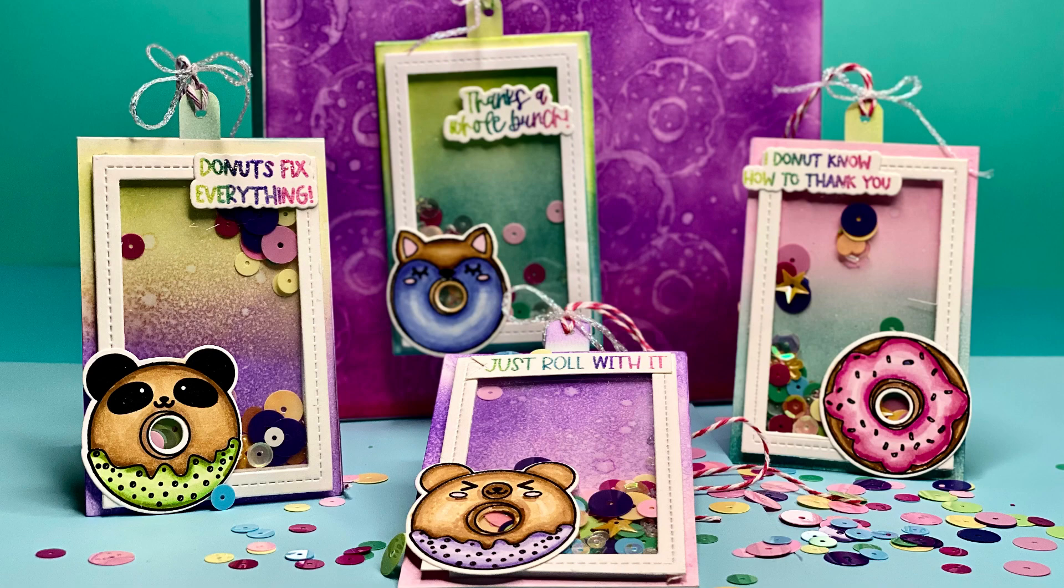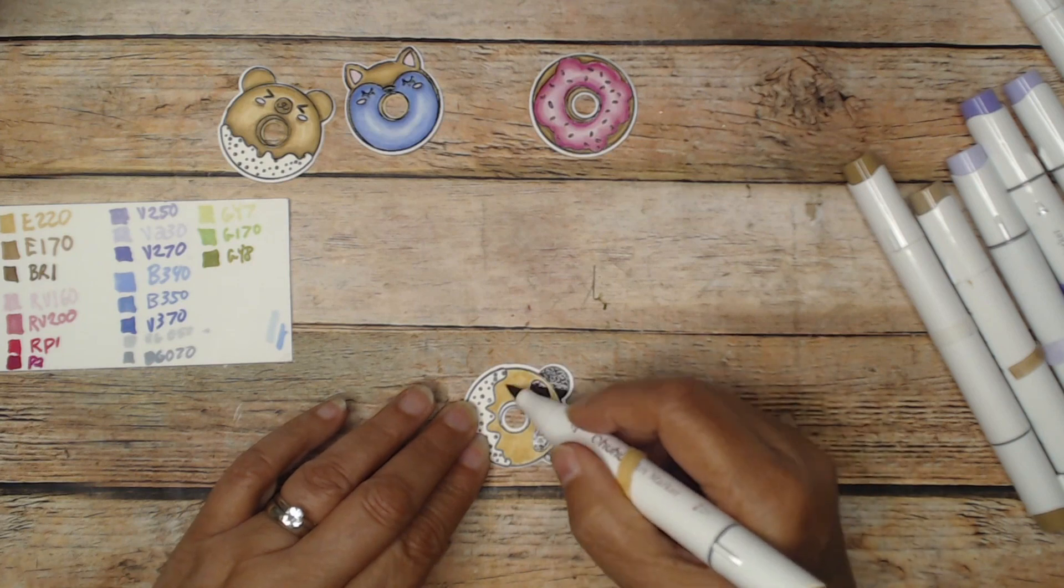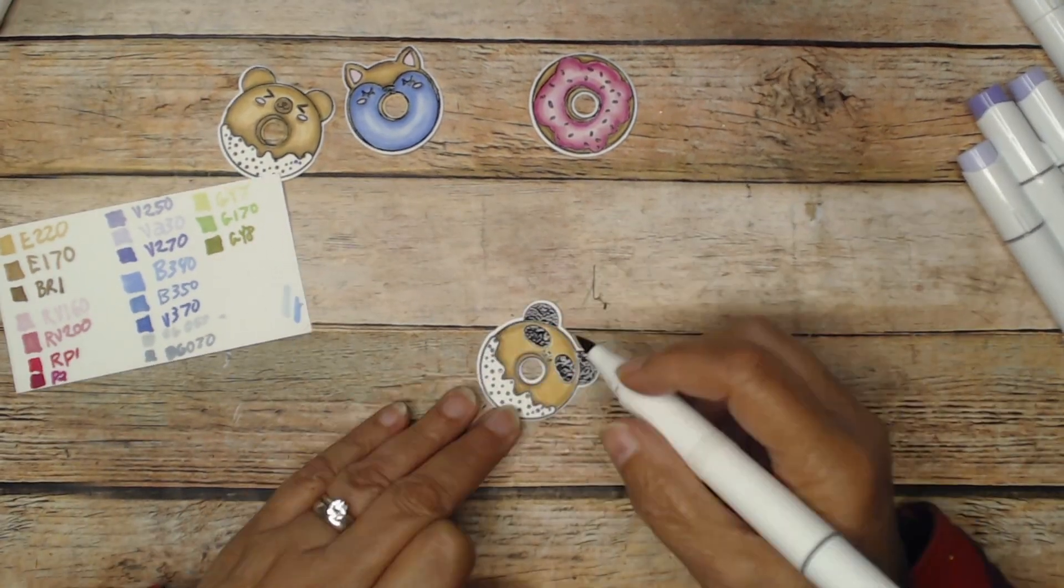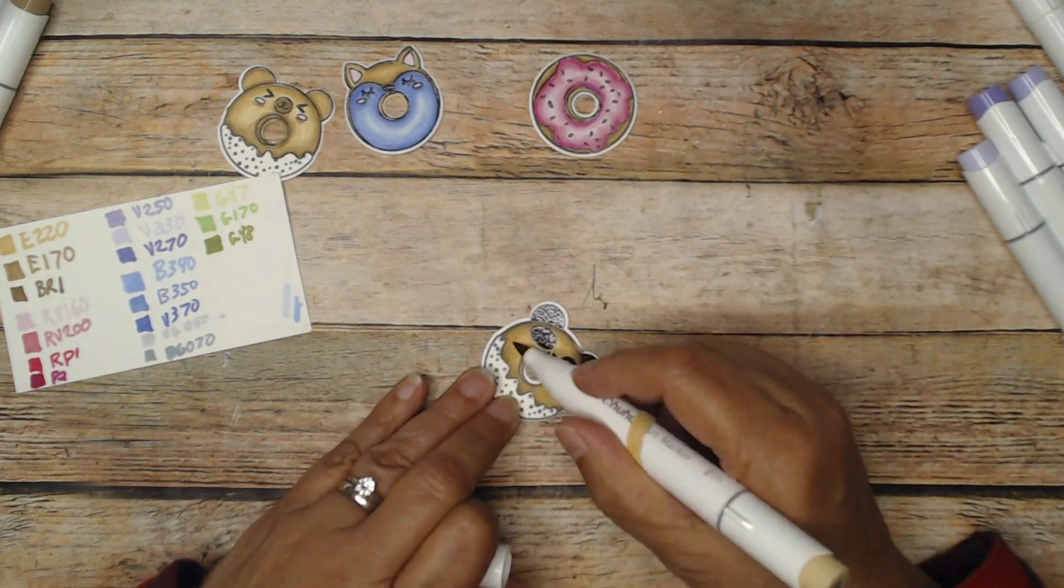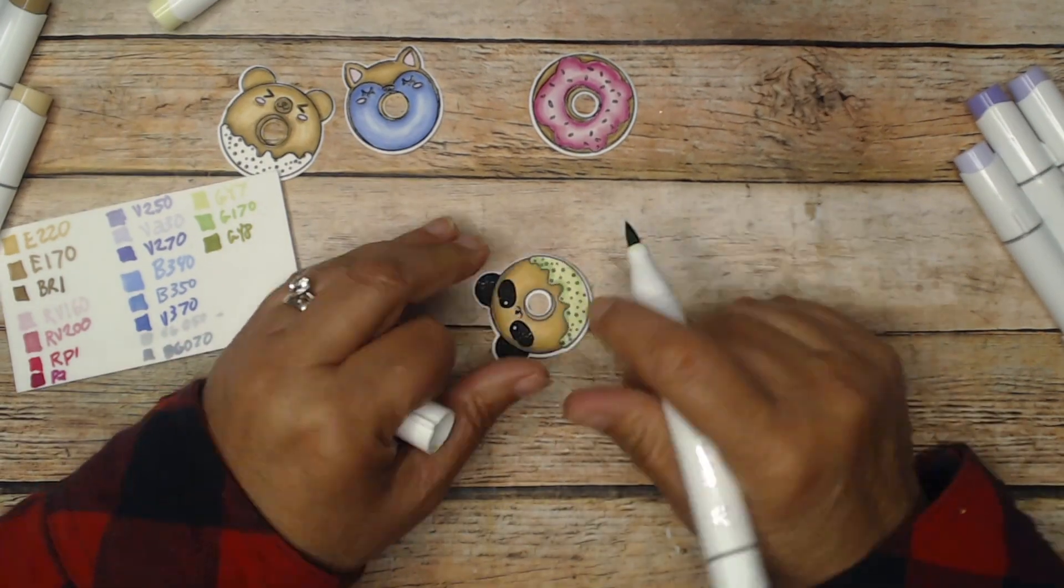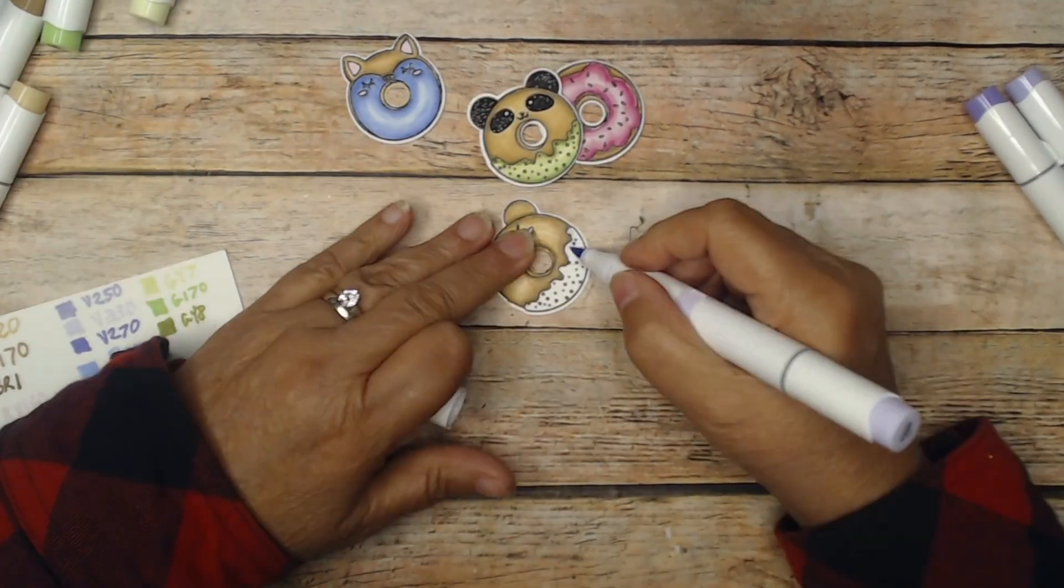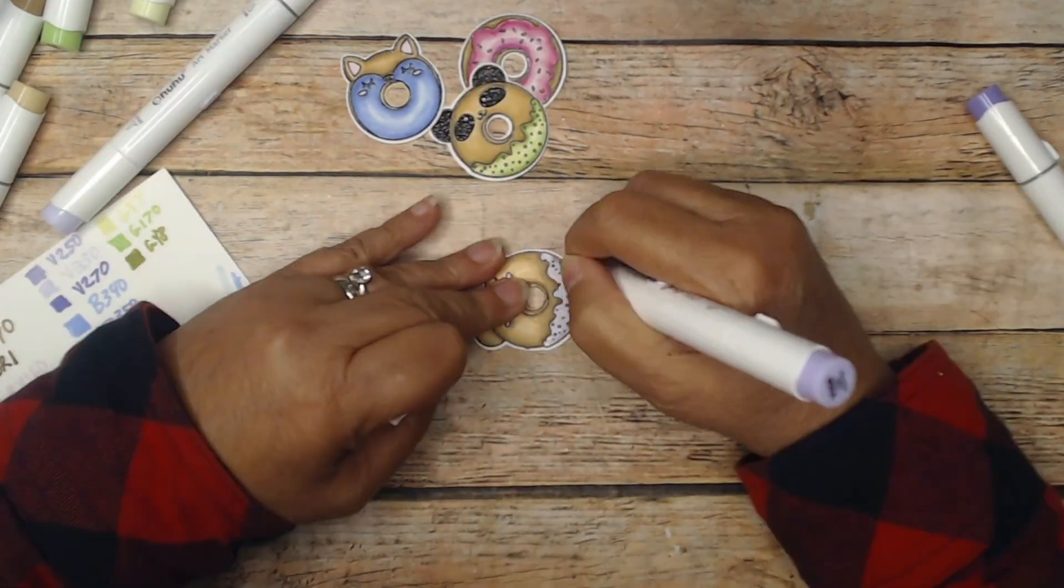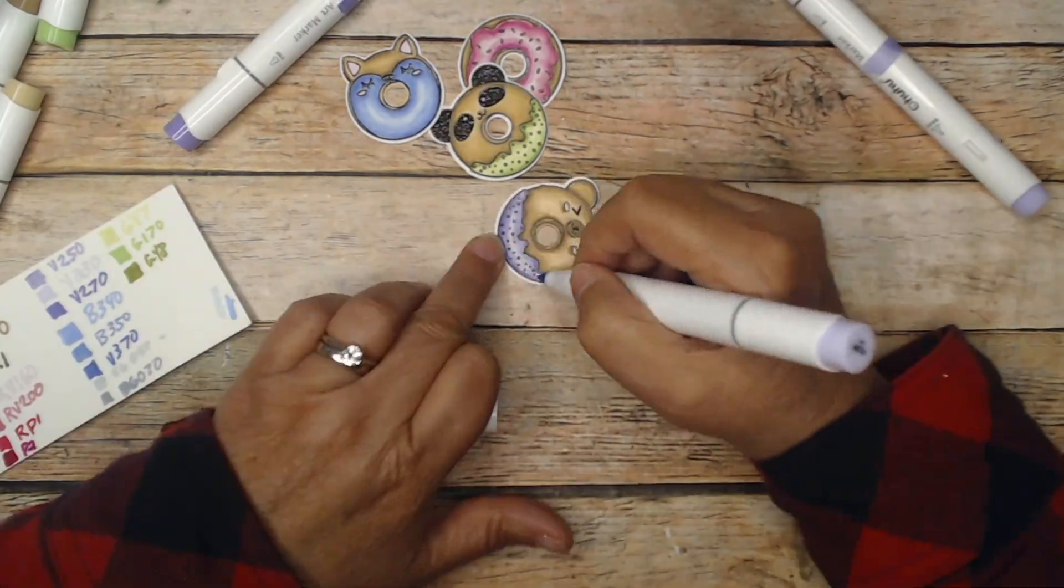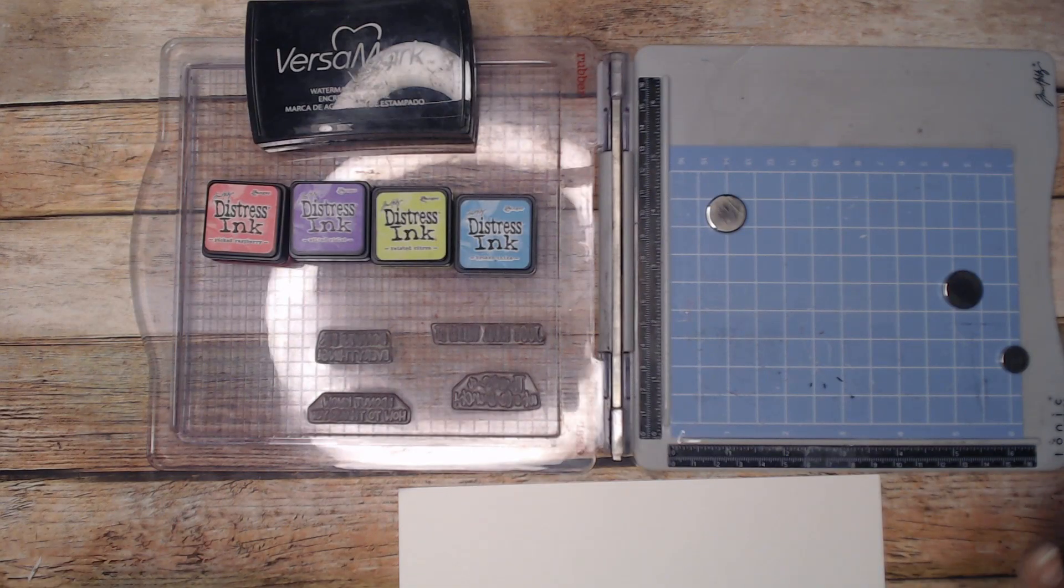So let's get started. I've already stamped and used the die to cut out four of the donuts, and then I'm taking three different shades for each color of my alcohol markers. I color it with the lightest tone, then go around with the medium shade around the edges to shadow it, and then go with a smaller footprint with the darkest shade, and then I am done with my coloring.